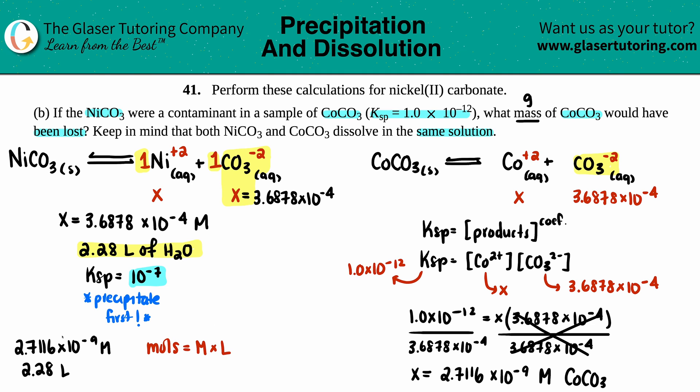I'm just going to multiply these two together. Moles equals 2.7116 times 10 to the negative ninth times 2.28. I get 6.182 times 10 to the negative ninth moles of the compound cobalt(II) carbonate, CoCO3.